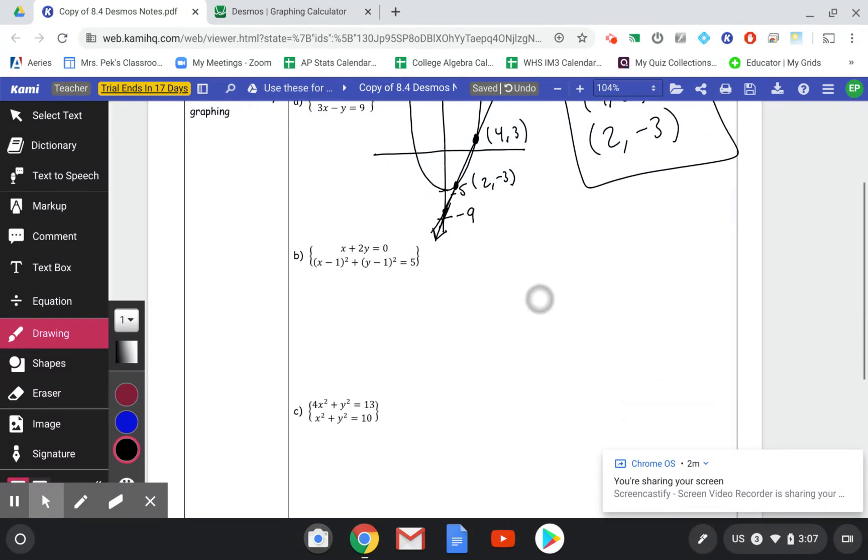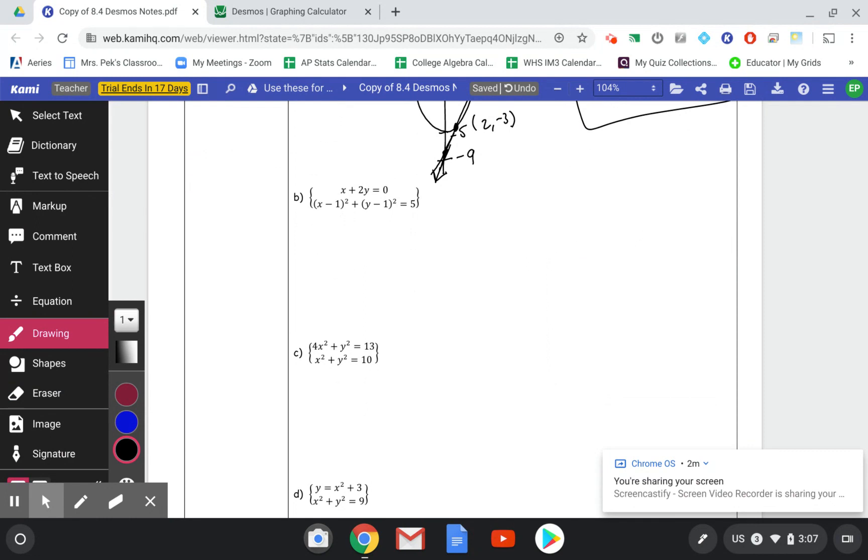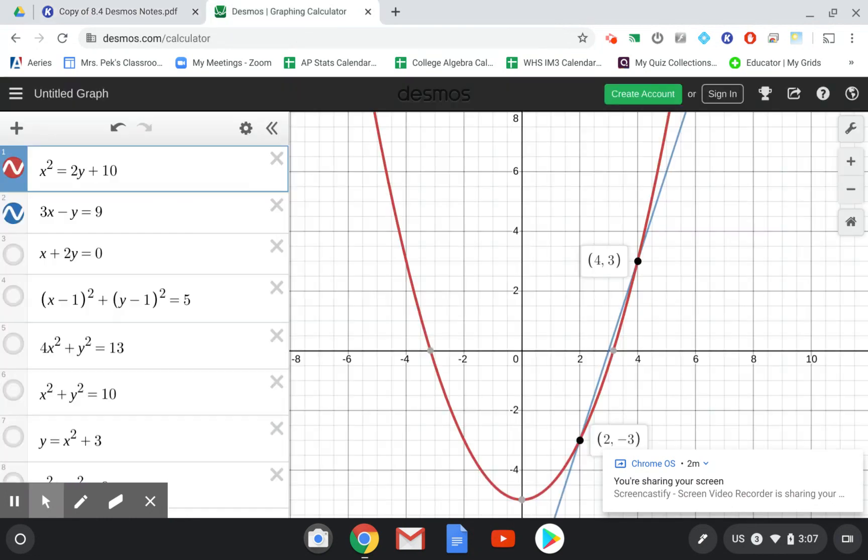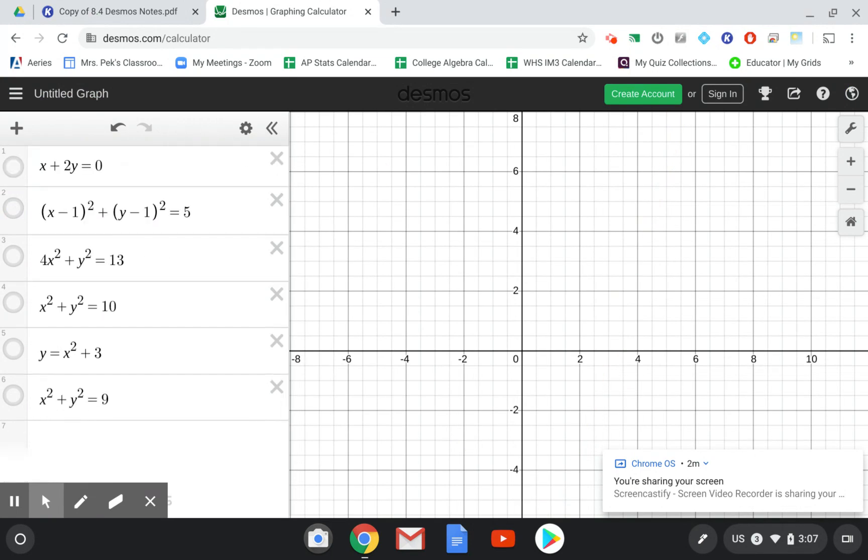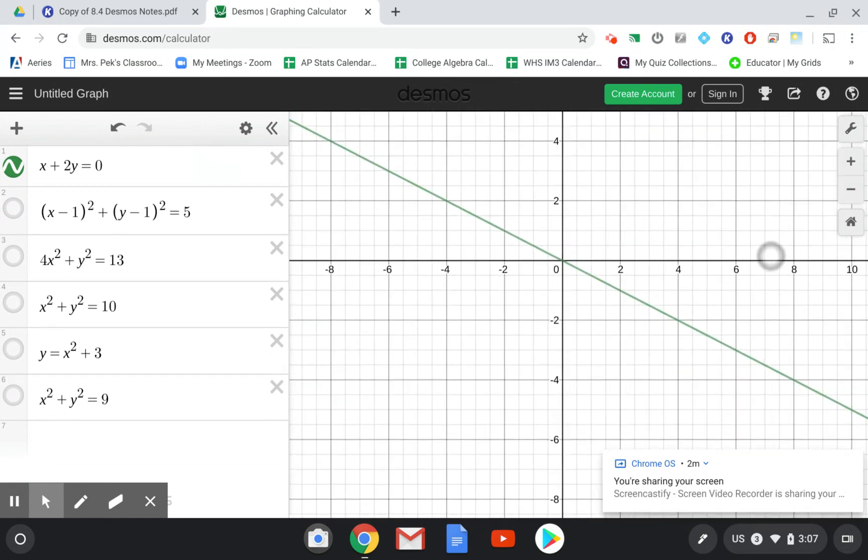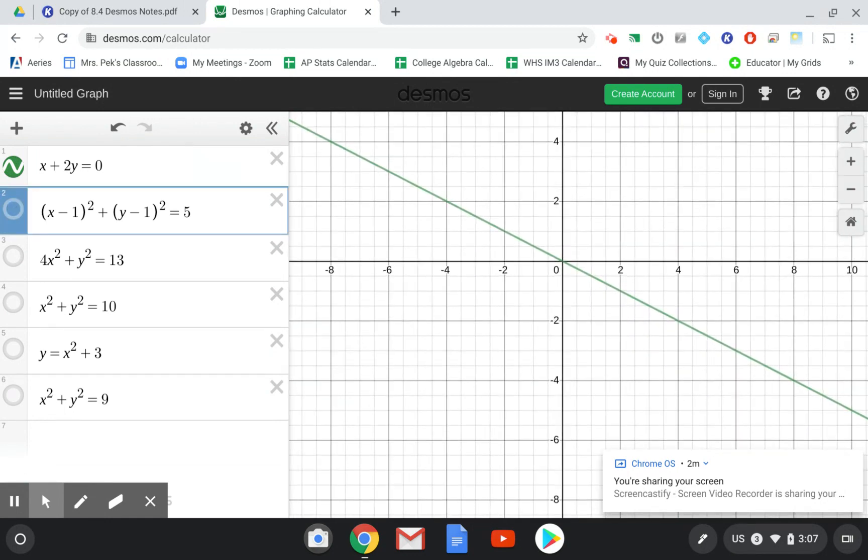All right, next one, we have a line, x plus 2y equals 0, and a circle. Let's look at what that looks like. So I'll get rid of these. And here is x plus 2y equals 0. And our circle, x minus 1 squared plus y minus 1 squared equals 5. And we can see that the circle and the line cross each other in these two points here.